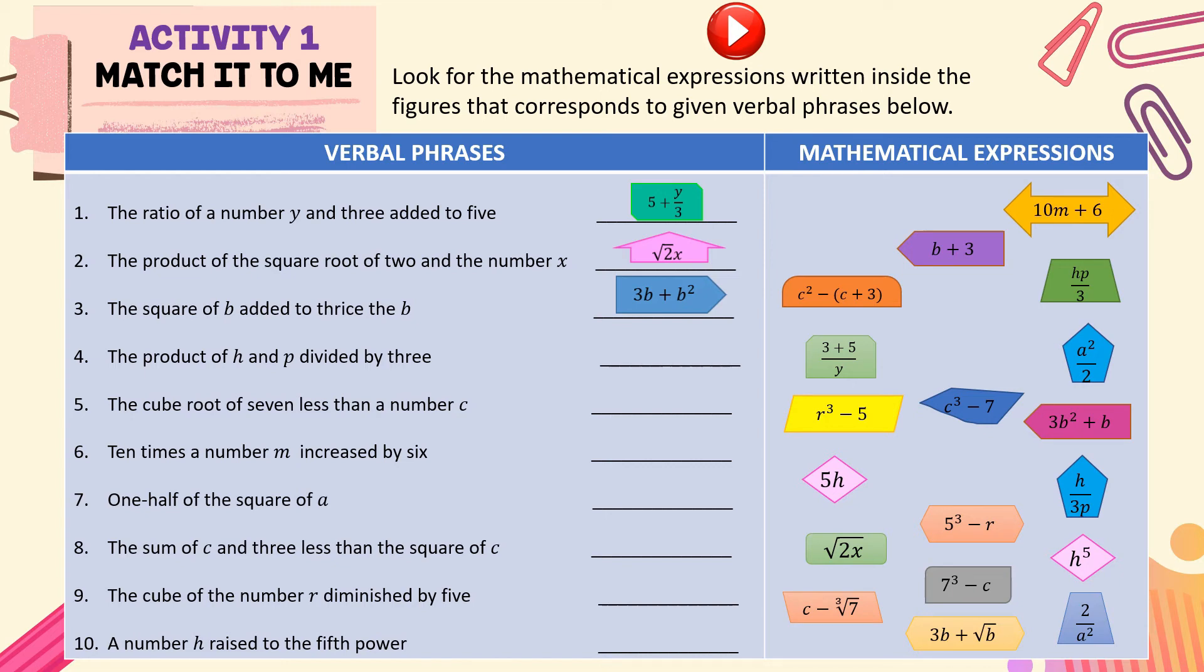For number 4, the product of H and P divided by 3. We have HP over 3. For number 5, the cube root of 7 less than a number C. It will be written from right to left. So, we have C minus cube root of 7.